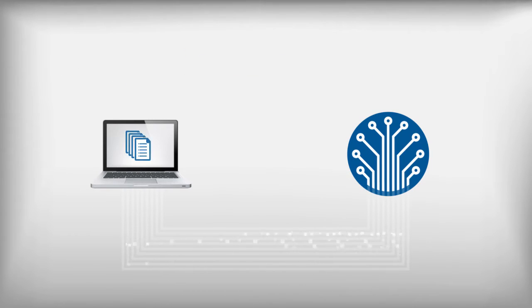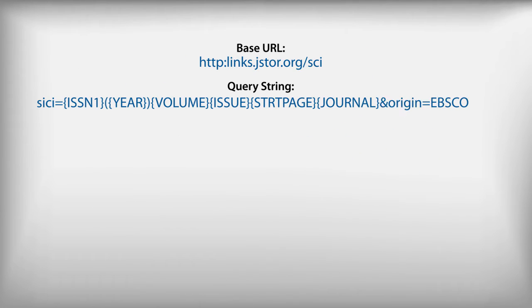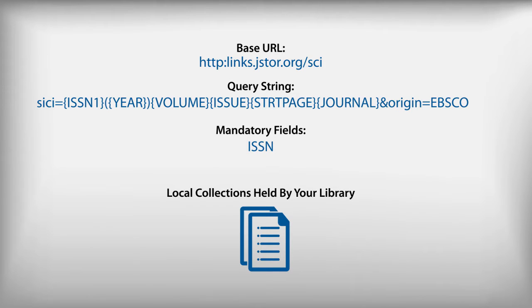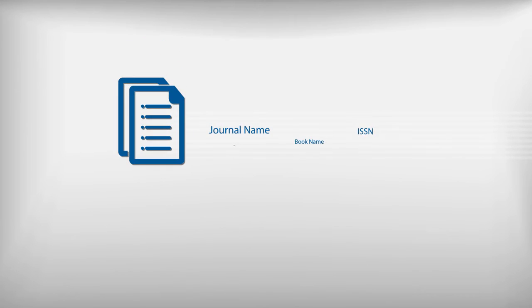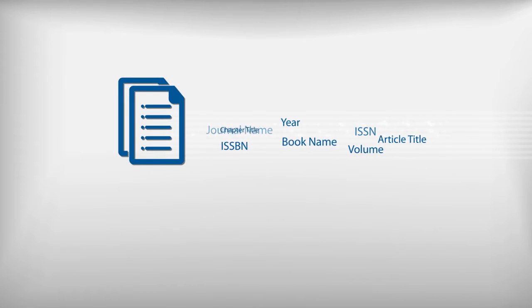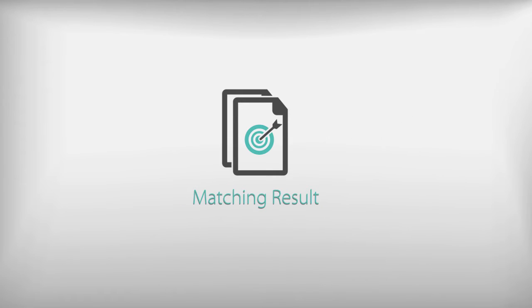Key elements include base URL, query string, mandatory fields, and local collections held by the library. When the target is a specific article, the more metadata we are able to pass through a custom link, the more accurately we will be able to link to a matching result.